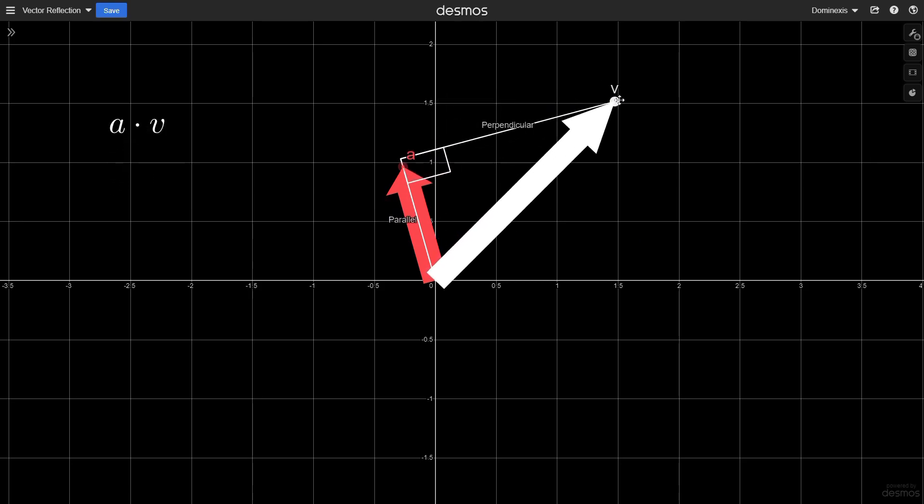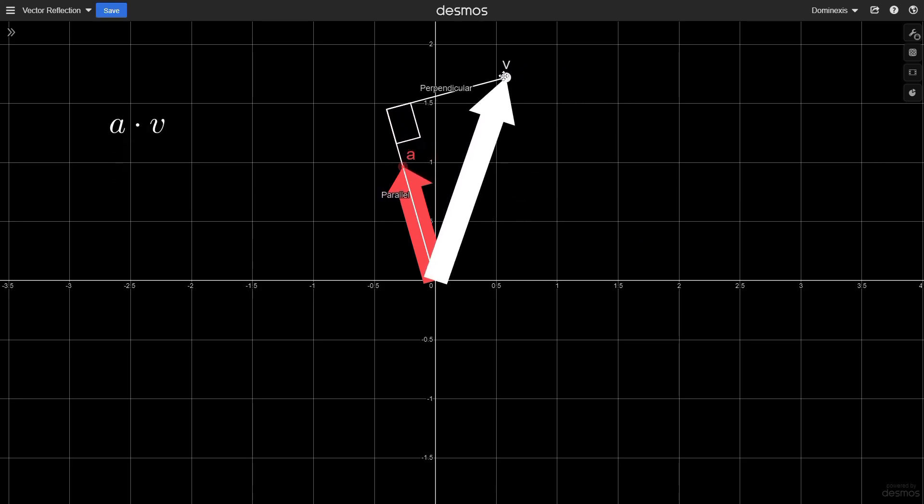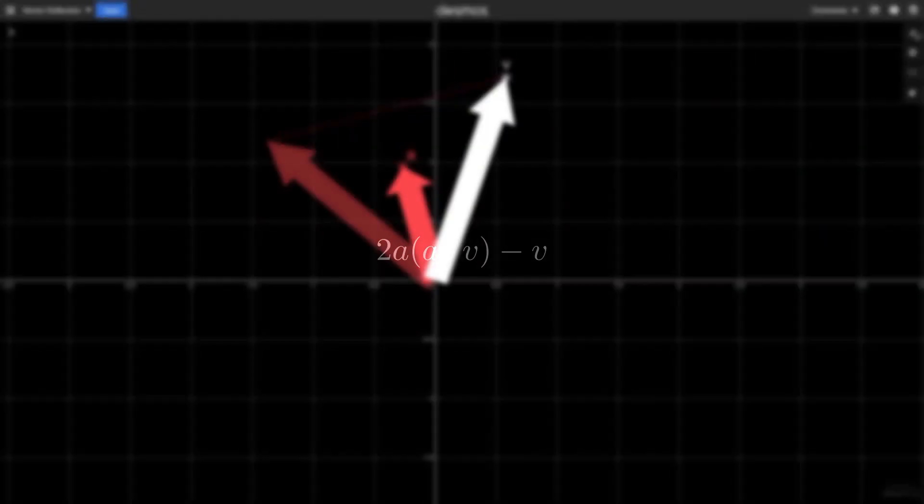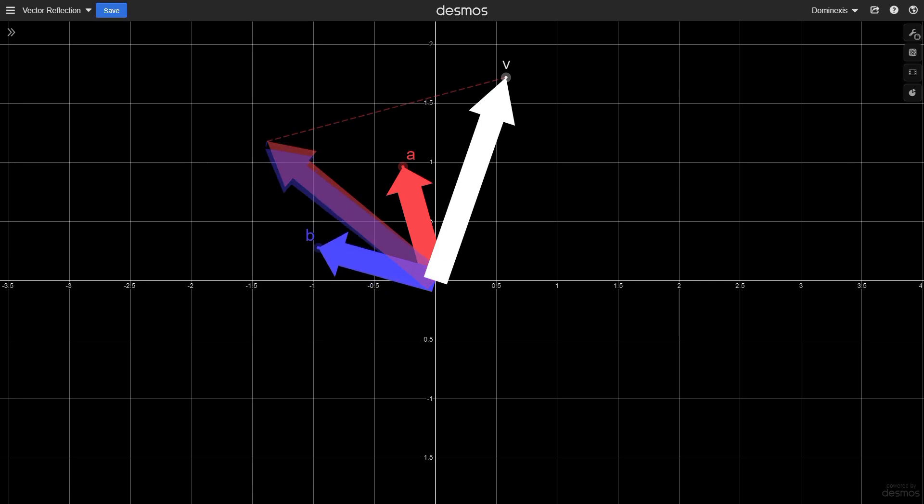Let's assume that A is a unit vector to make the math easier. To reflect it, we want to keep the part of V which is parallel to A the same, but we want to negate the part which is perpendicular. By taking the dot product between A and V, and then scaling A by that, we project V onto A. This is the parallel part of V. To get the perpendicular part, all we have to do is subtract the parallel part off of V. Now we just subtract the perpendicular part off of the parallel part to reflect V. This simplifies to this formula.